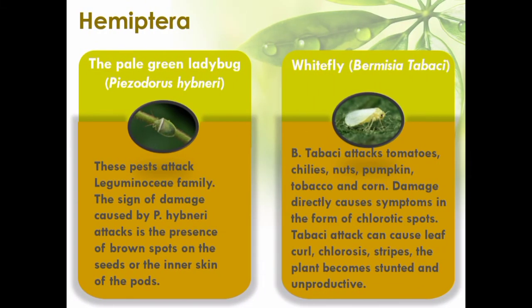The pale green ladybug is an important polyphagous pest. It attacks leguminosae family plants such as soybeans, green beans, good beans, cowpeas, long beans, and others. The sign of damage caused by pale green ladybug attacks is the presence of brown spots on the seeds or the inner skin of the pods.